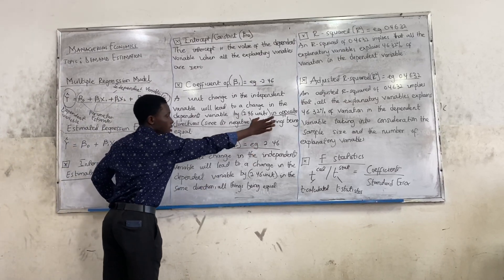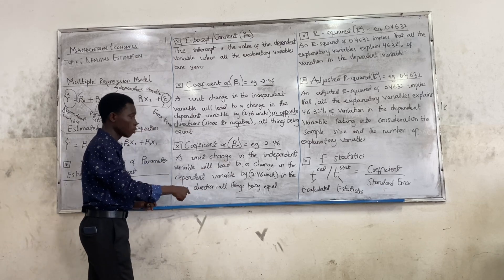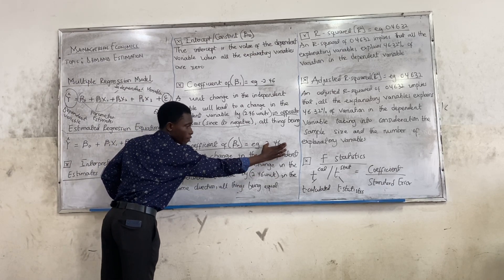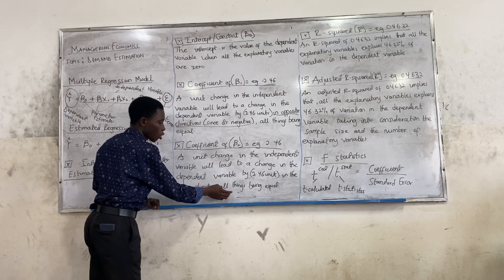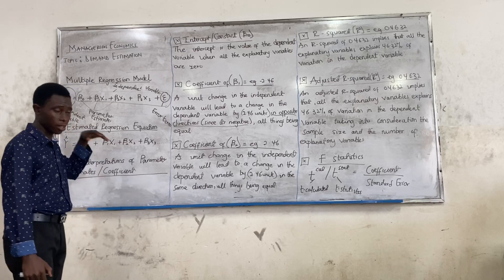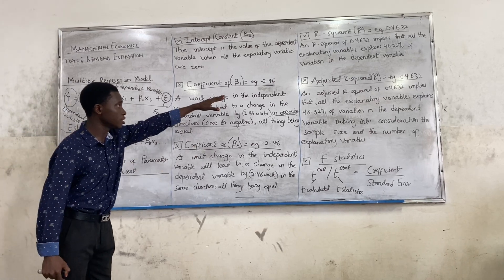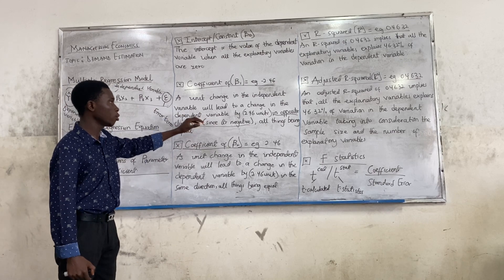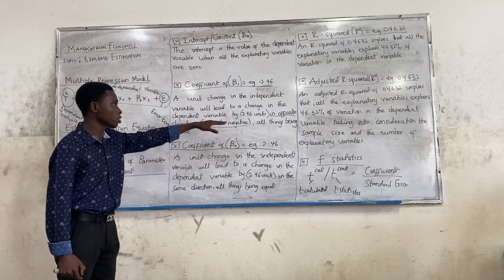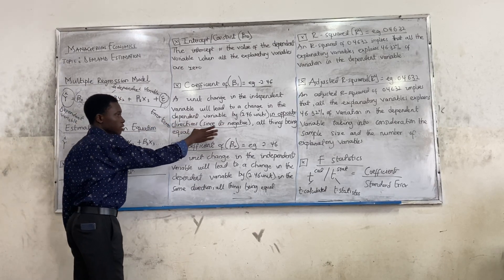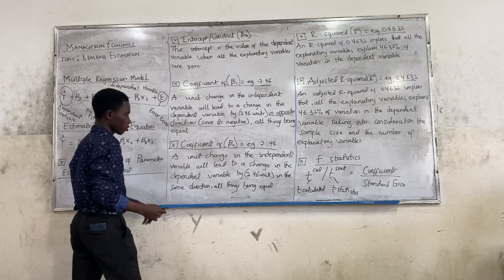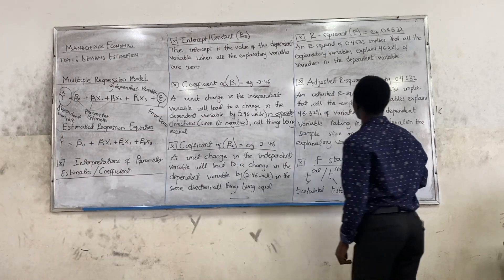But if it's positive, you only change the side. A unit change in the independent variable will lead to a change in the dependent variable by 2.4, since it's positive, in the same direction, all things being equal. You do the same for β₂ and β₃. If it's negative, the negative side will come in; all things being not equal.